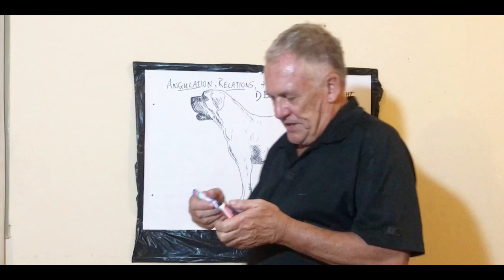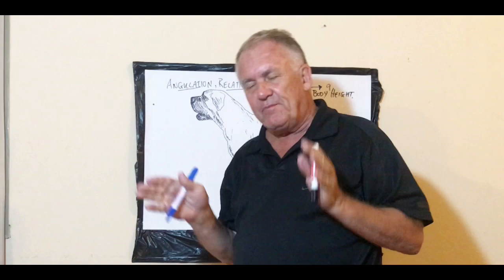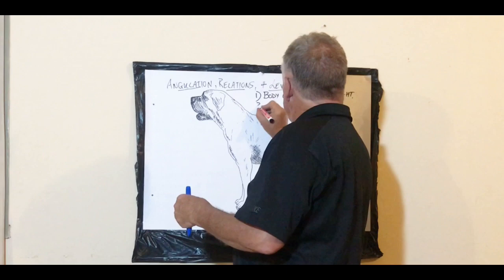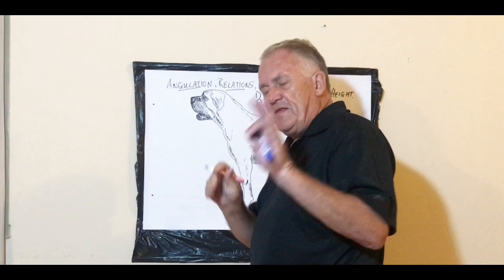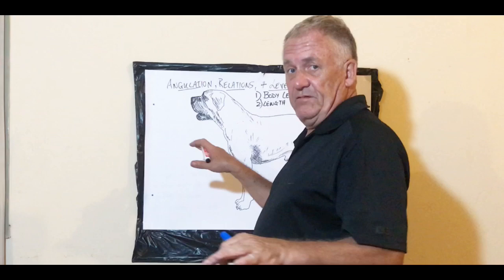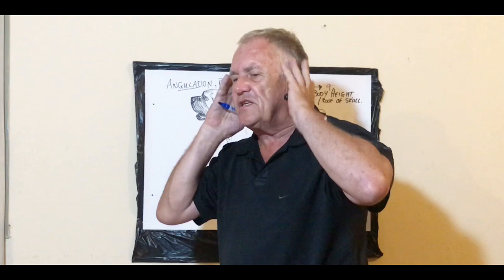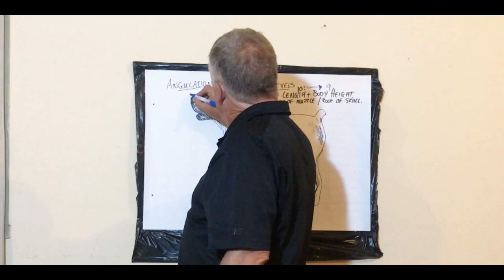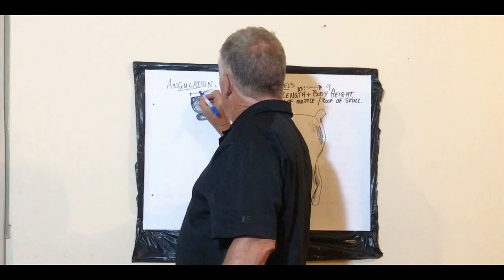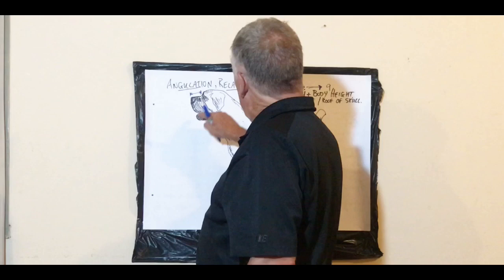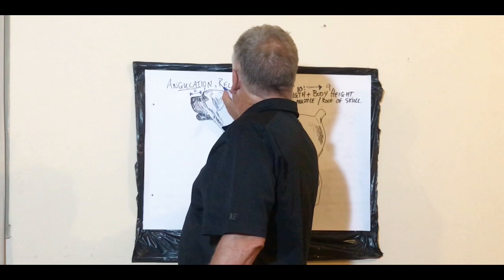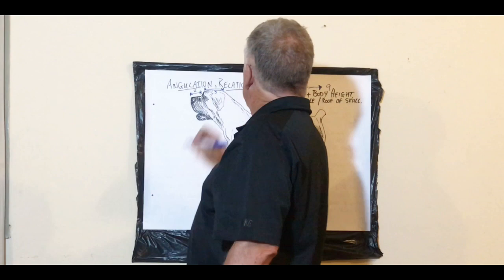The second important thing also addresses one of the new fallacies about the breed: the length of the muzzle versus the roof of the skull. This is very important because I hear all these things about houndy dogs with longer noses, longer ears, and narrower heads. The breed standard says the nasal area — measured from the middle of the stop of the dog to the tip of the nose — is 2 units, and the length of the roof of the skull is 3 units.